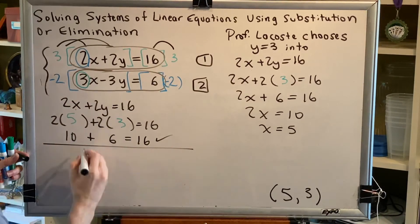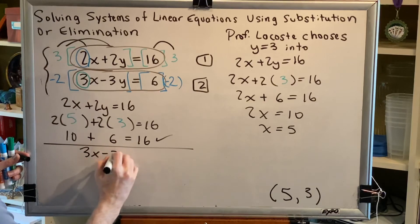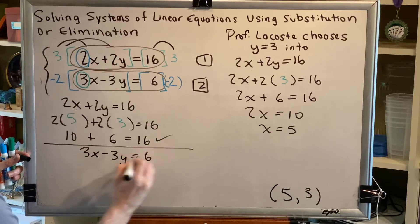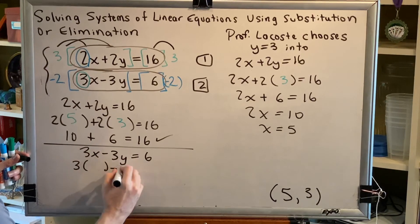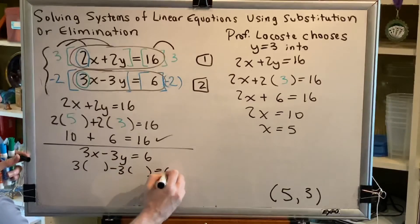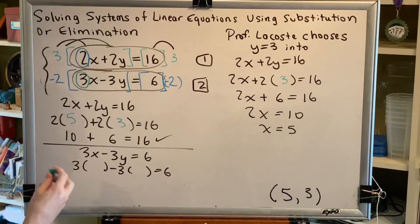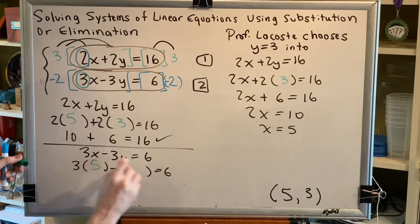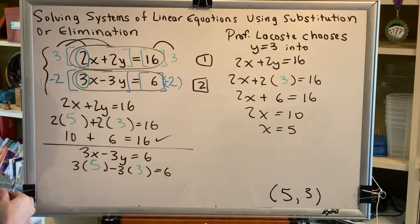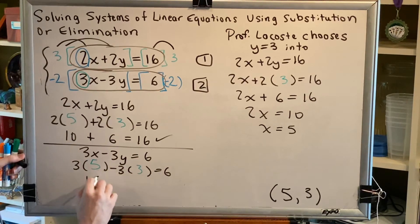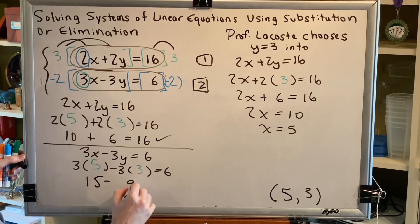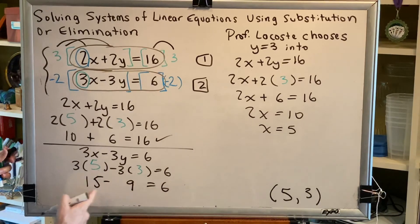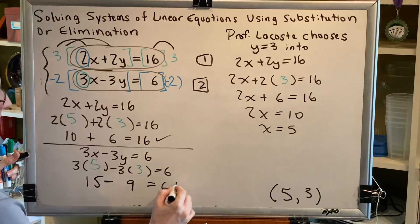But does it also satisfy the second? 3x minus 3y equals 6. 3 times the value of x minus 3 times the value of y equals 6. Well, again, x is 5, y is 3. And so we get 3 times 5, 15, minus 3 times 3, 9, equals 6. Does 15 minus 9 equal 6? Yes.